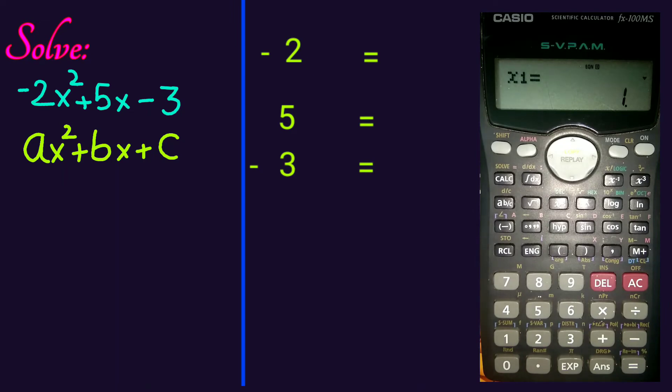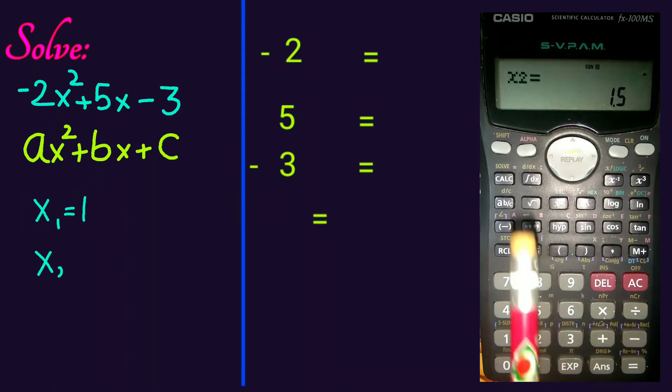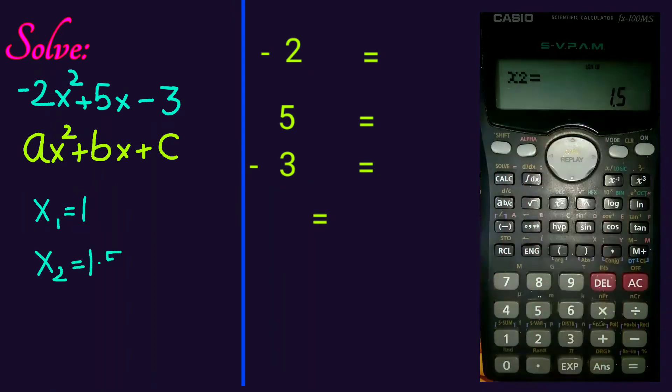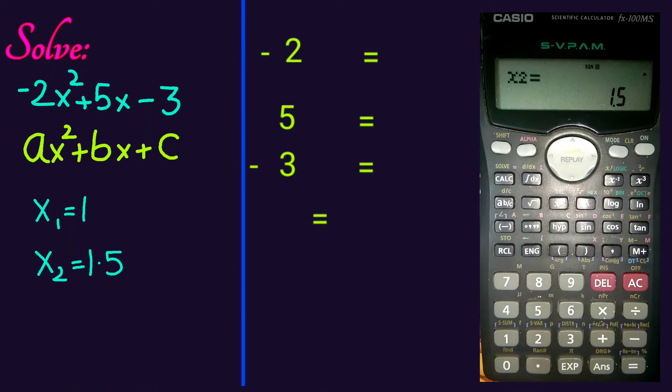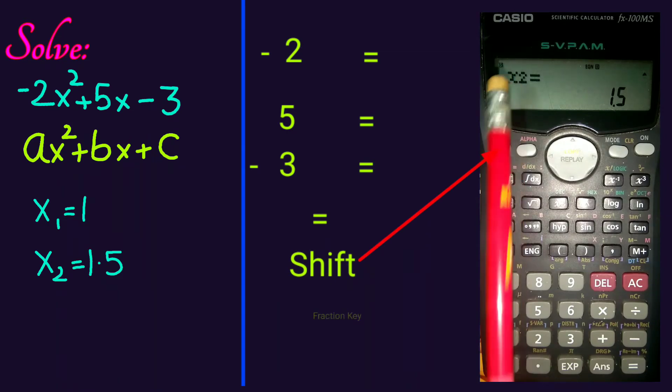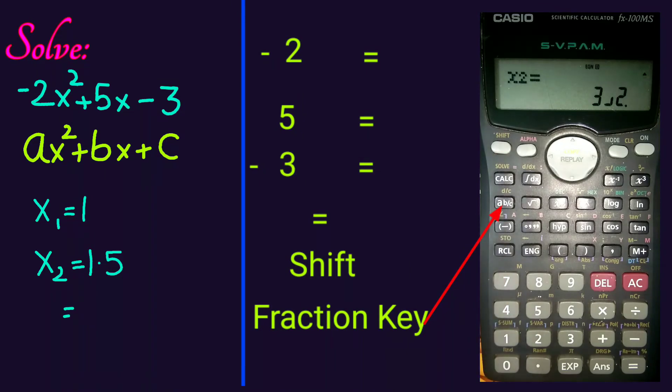We have x1 equal to 1. Press equal key again. x2 equal to 1.5. It is a decimal value. Let's convert to the fraction. Press shift, followed by fraction key. x2 equal 3 over 2.